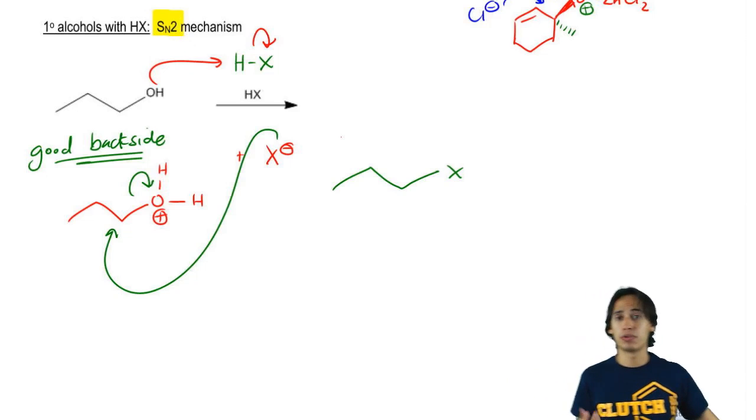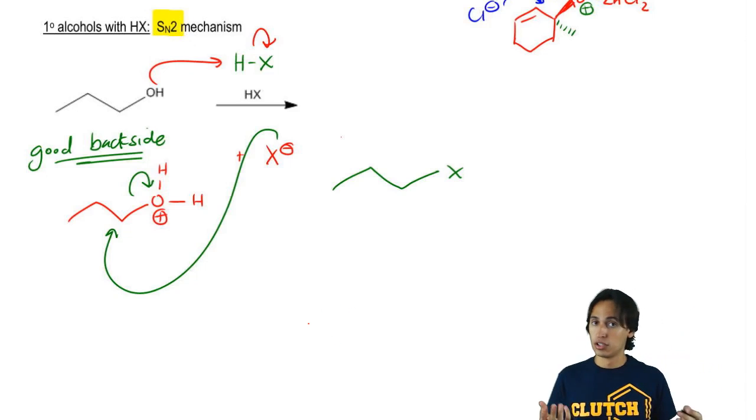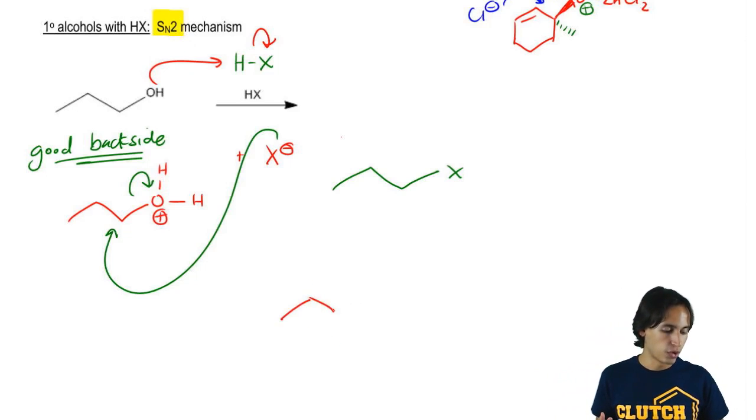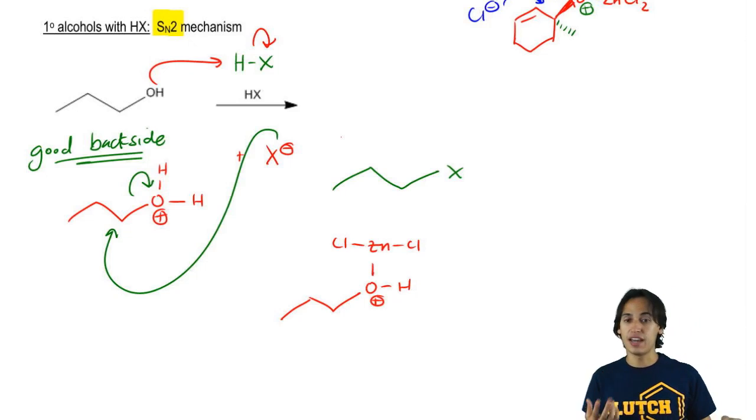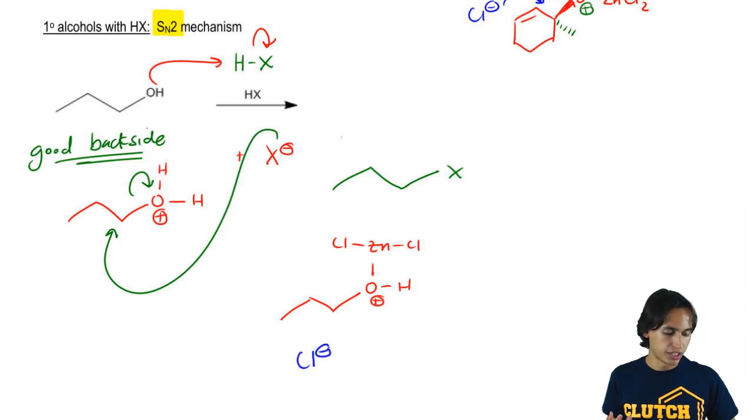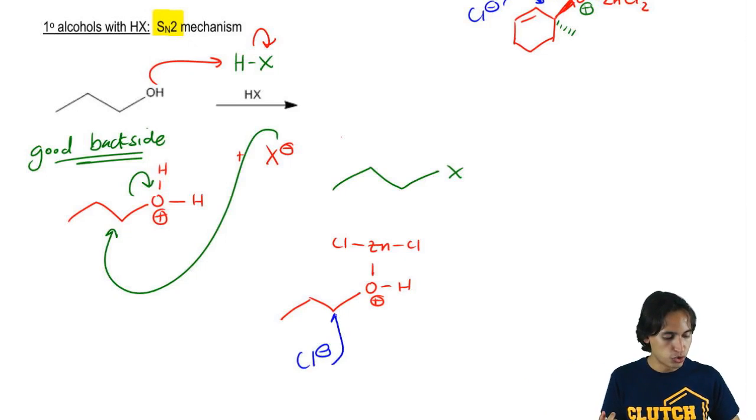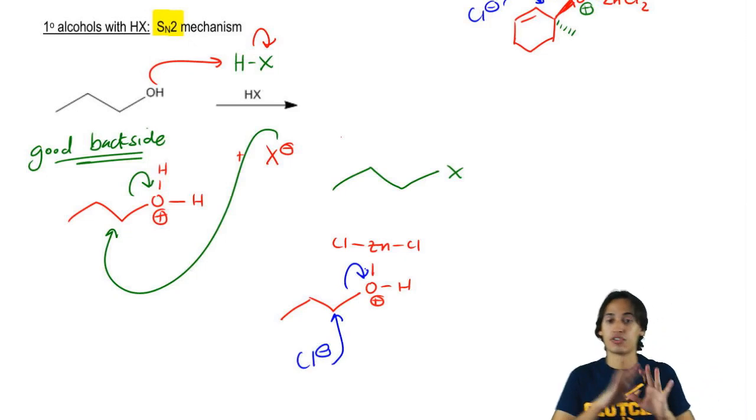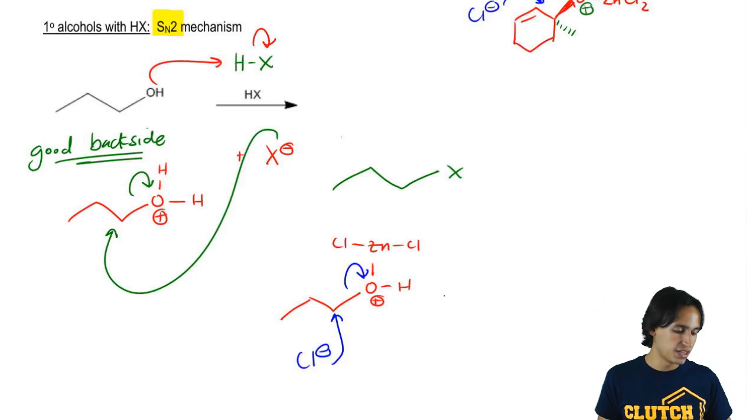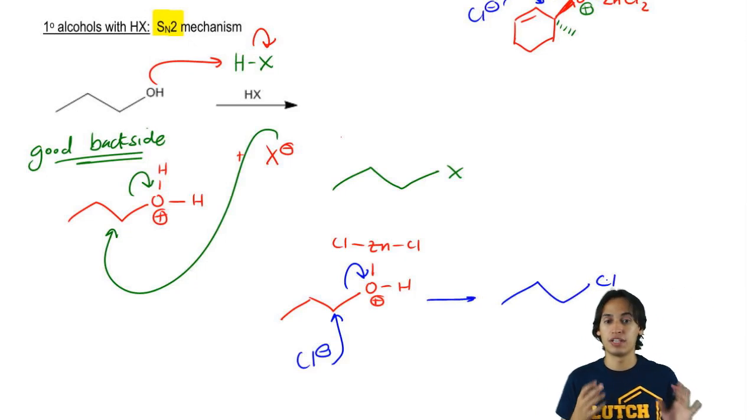Same exact thing would apply if I used HCl and the Lucas reagent. What I would wind up getting is OH with then a zinc and two chlorines and a positive charge. And what you would get in the second step is that my chlorine would do a backside attack and kick out that entire complex. So then in this case, if I was reacting specifically with those reagents, I would get a chlorine.